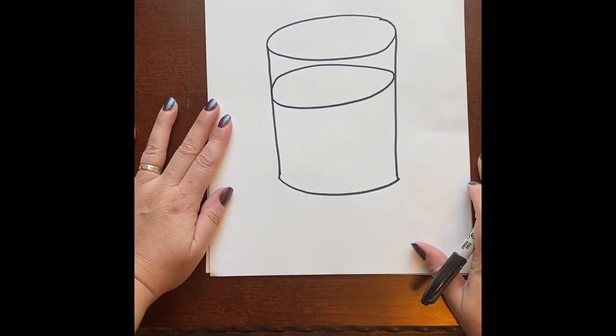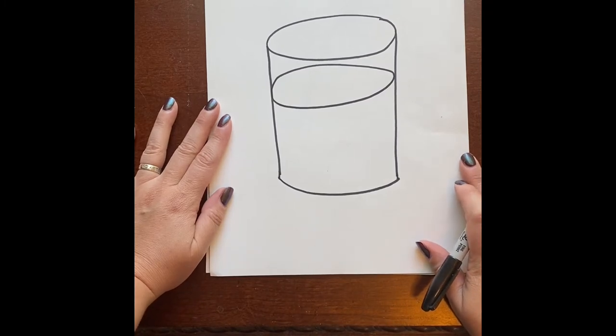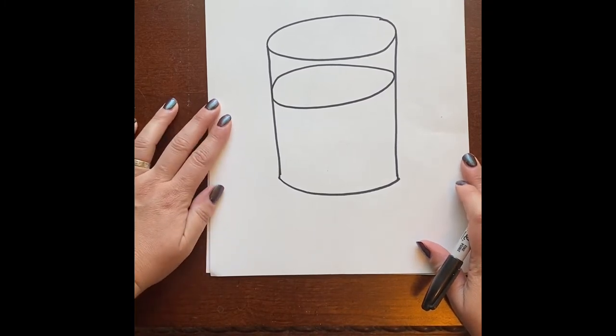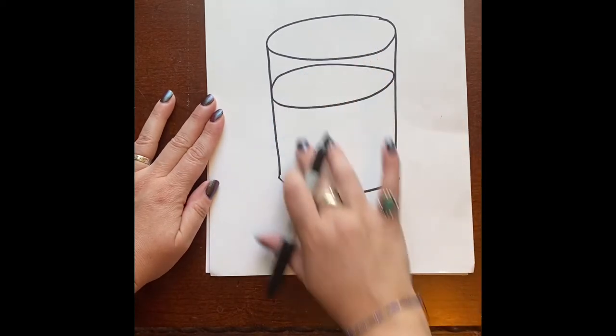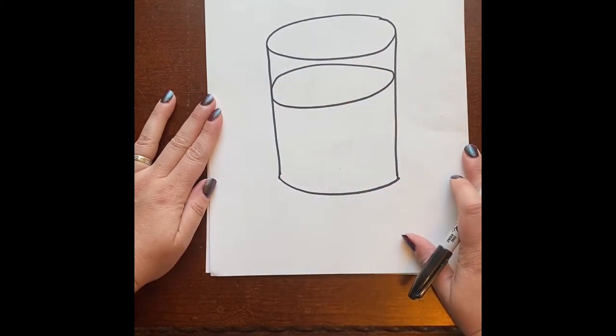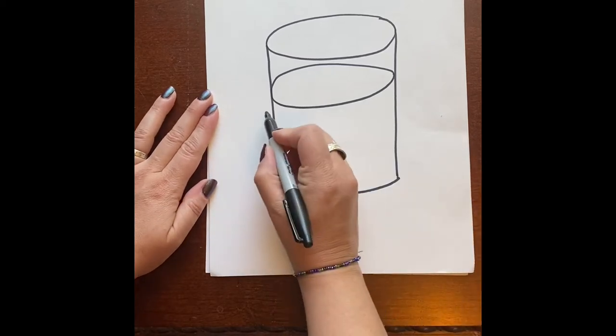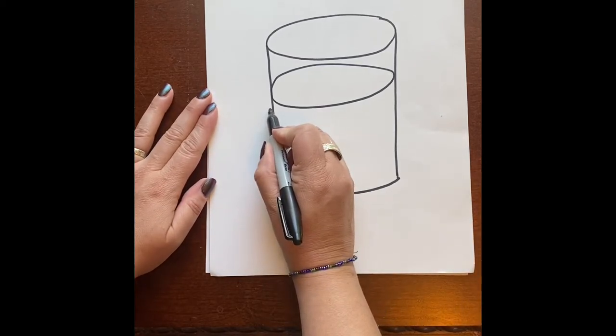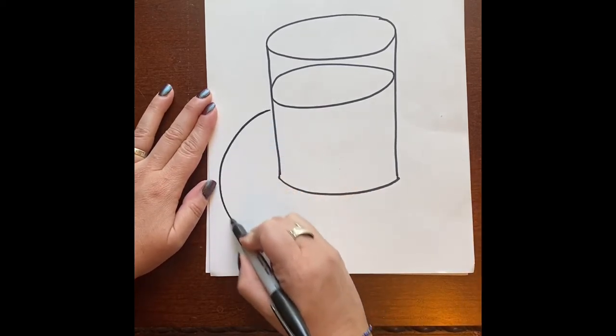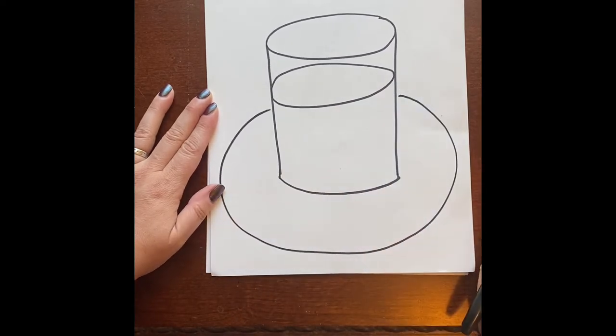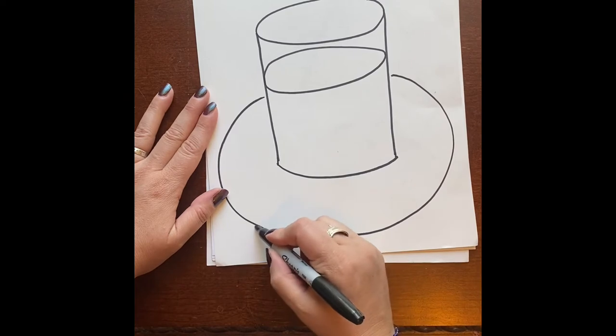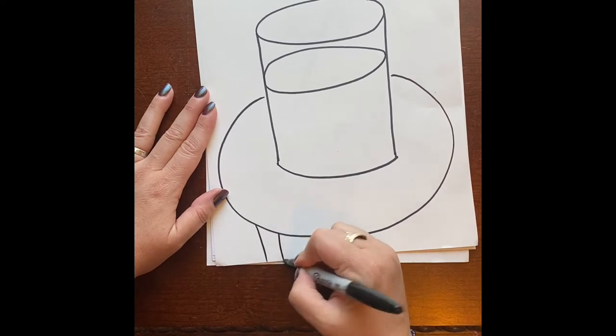The next thing that we can do is put this goldfish bowl on a table. It can't just be floating around, so I'm going to make a curved line from one side around to the other. Now I might see a couple of the legs coming down.